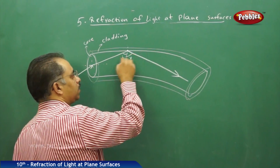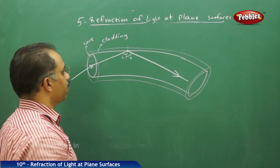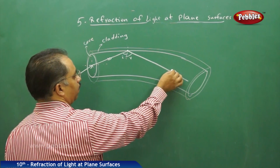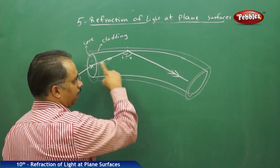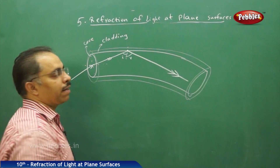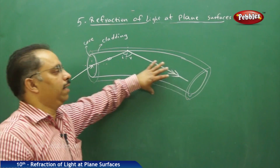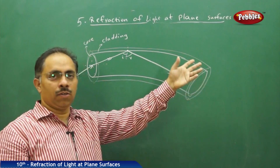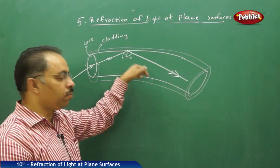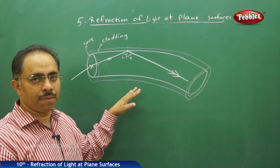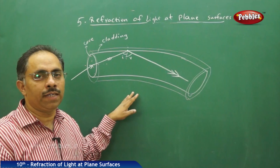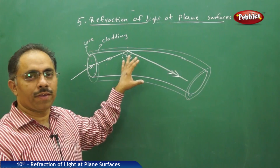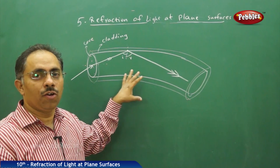This angle of incidence is equal to the angle of reflection. So if it is travelling in this direction, it will reflect and then travel. Whatever the bending there is, it will travel and go. So we are able to bend the light.